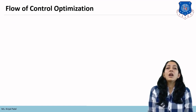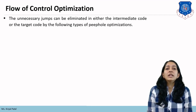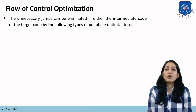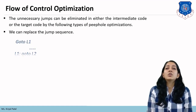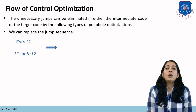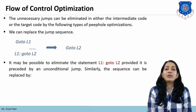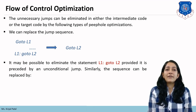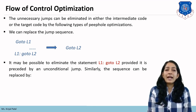The next technique is flow of control optimization. Unnecessary jumps can be eliminated in either the intermediate code or the target code. We can replace the jump sequence — for example, 'goto L1' and then L1 says 'goto L2'. We can eliminate the 'goto L1' and directly jump toward L2, because the jump from L1 to L2 is unnecessary. It may be possible to eliminate the statement 'L1: goto L2' provided it is preceded by an unconditional jump.